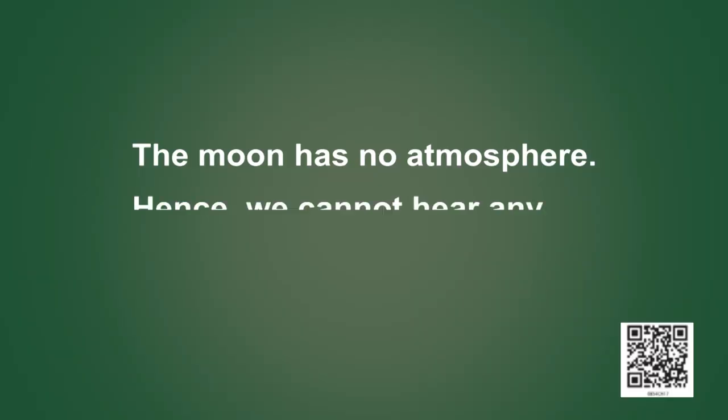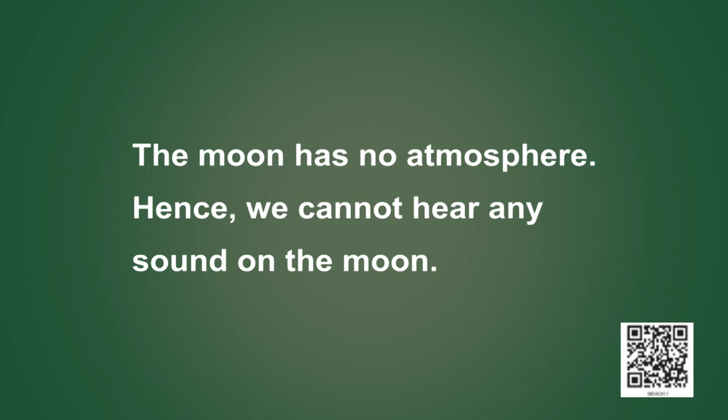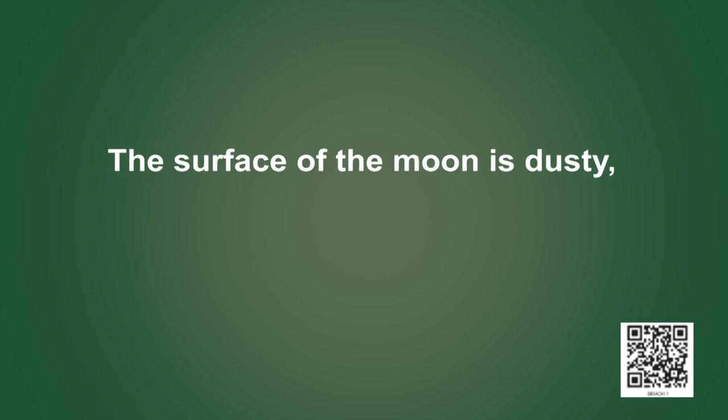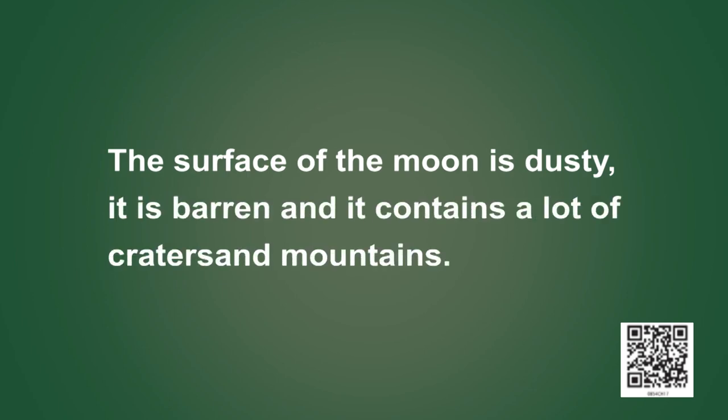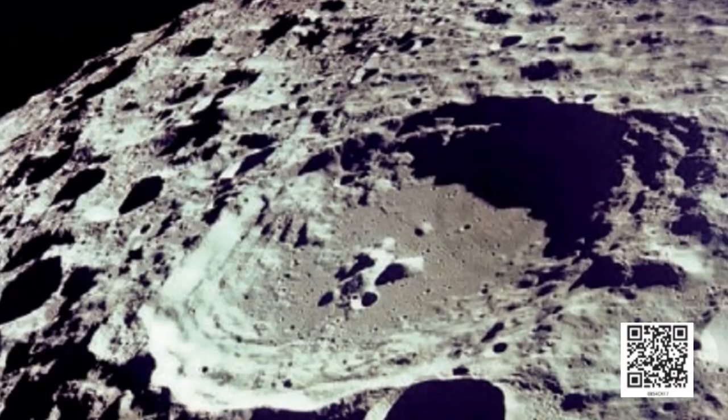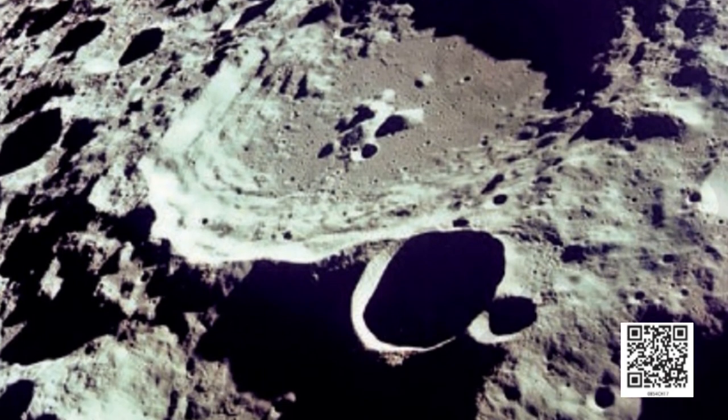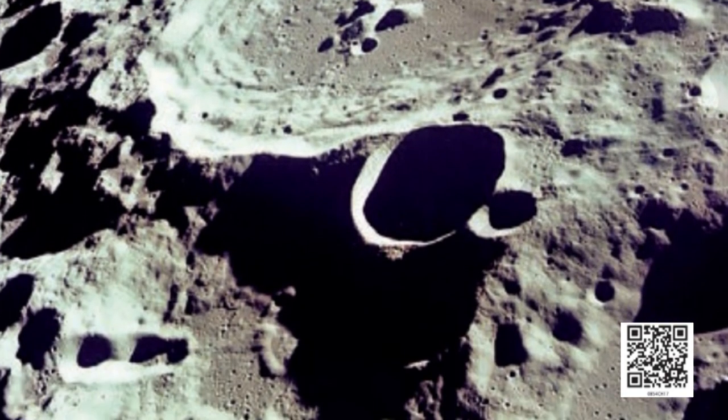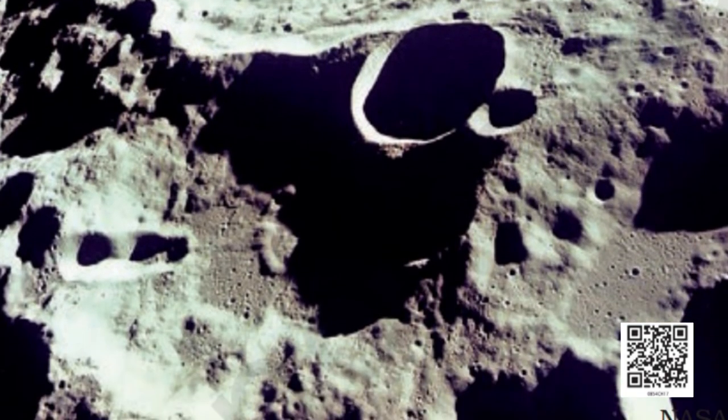You might also be interested in knowing that moon has no atmosphere, which means we cannot hear any sound on the moon. The surface of the moon is dusty, barren, and contains a lot of craters and mountains. How do we know these things? We know these things because of the observations we have been doing since a lot of time. Recollect how we talked about telescopes that were used by astronomers. Similar telescopes are used by the scientists to observe the surface of the moon.